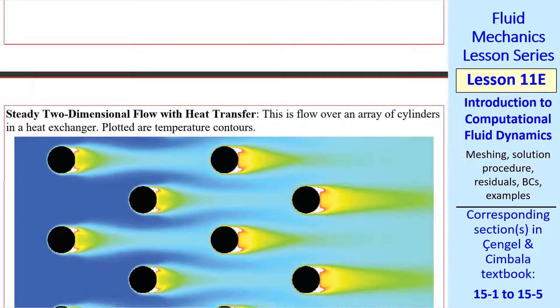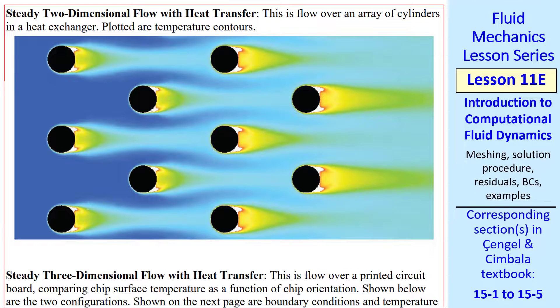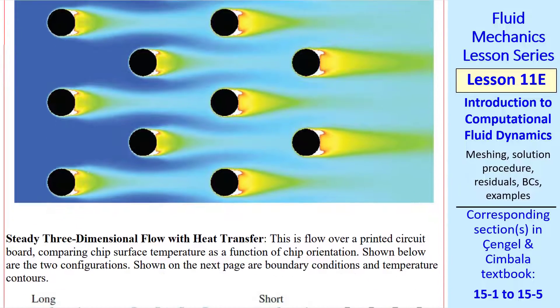We can also add heat transfer to our flow equations. This would involve adding an energy equation. The energy equation would also have its own residuals. Here's an example of flow over an array of cylinders in a heat exchanger. This is a 2D analysis where these cylinders are infinitely long into the page. They're heated and these are temperature contours showing the individual wakes of these cylinders and how the temperature of the fluid increases because of these heated cylinders. And overall, the temperature increases as we go downstream. This is a 2D case.